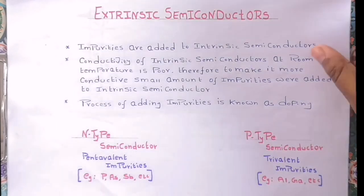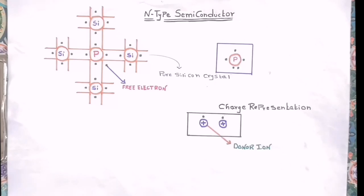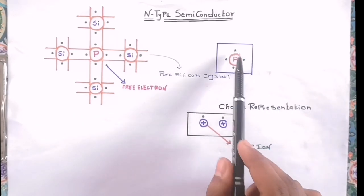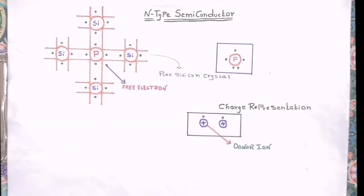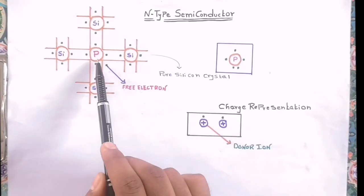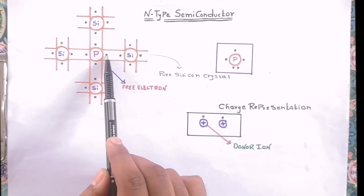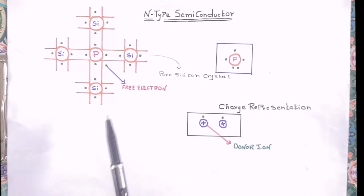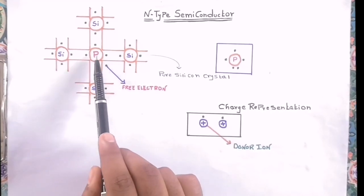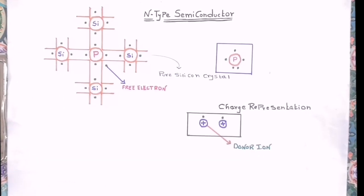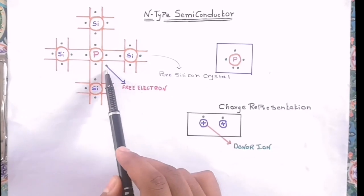Now let's see N-type semiconducting material. In a pure silicon crystal, if pentavalent impurities are added, it is classified as N-type semiconducting material. Taking the example of a Phosphorus atom, it consists of five valence electrons in its outer shell. When we dope this Phosphorus atom into a pure silicon crystal, four of its valence electrons will be involved in bond sharing, and the fifth valence electron will remain free and is loosely bounded by the Phosphorus atom. So for every Phosphorus atom added, there will be one extra free electron.